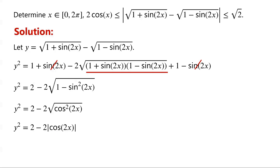So we have y² = 2 - 2|cos(2x)|. Then |y| = √2 · √(1 - |cos(2x)|).